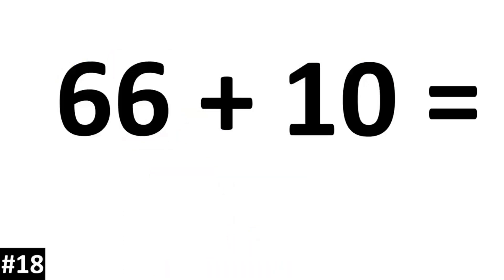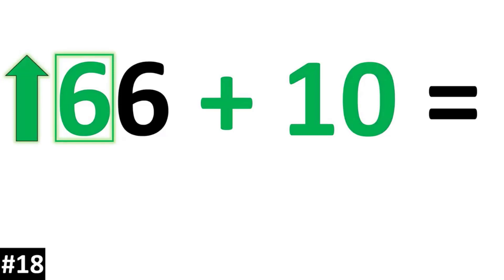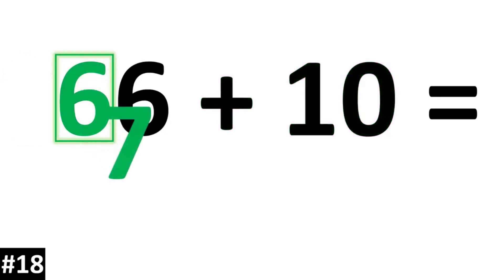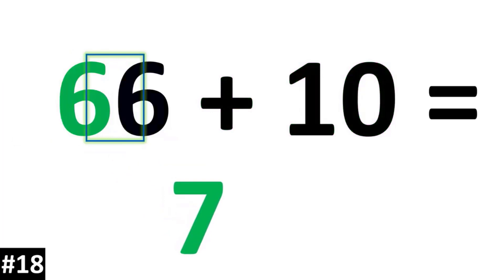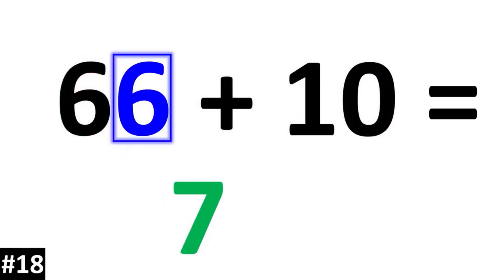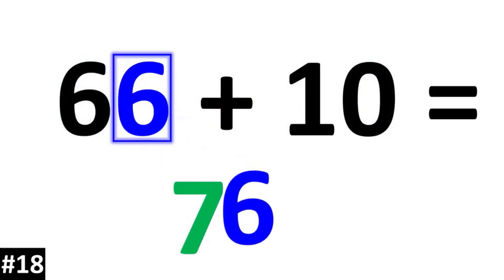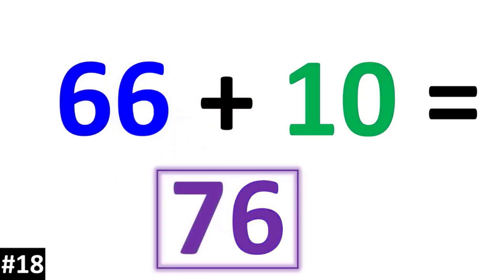66 plus 10: the tens digit of 6 is going to become a 7. The ones digit 6 stays the same. 66 plus 10 is 76.